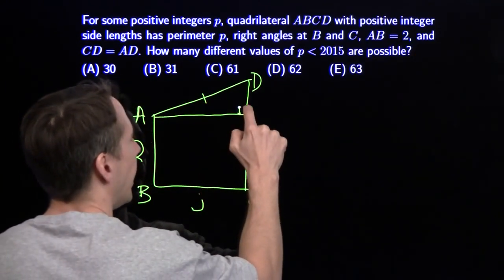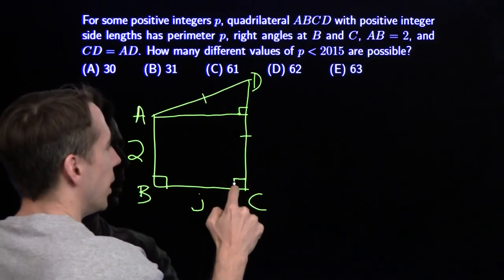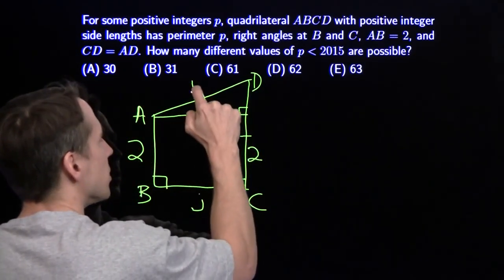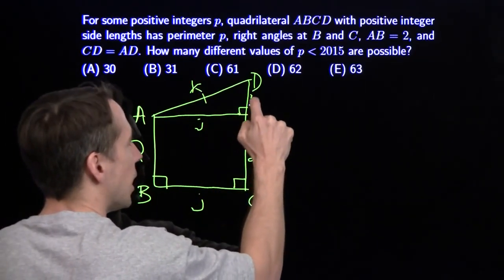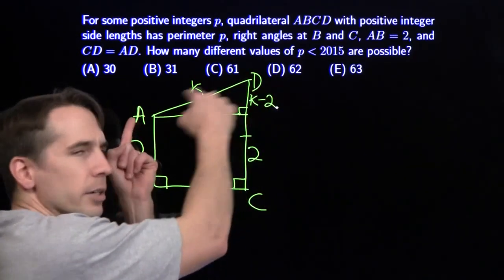There's the obvious right triangle to add this length. We've got a rectangle down here because we're told that these are right angles. This length here is J. This over here is 2. This is K. And this has to be K minus 2 because CD and AD have the same length. And there's a right triangle.